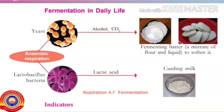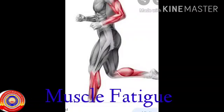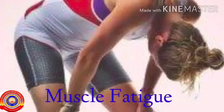In milk, Lactobacillus bacteria are present which convert it to lactic acid, making the milk curdle. In certain circumstances, anaerobic respiration takes place in human beings also. During strenuous exercise, energy utilization in muscles increases and oxygen availability decreases, causing muscle cells to produce energy by anaerobic respiration. Lactic acid is formed in the muscle cells.